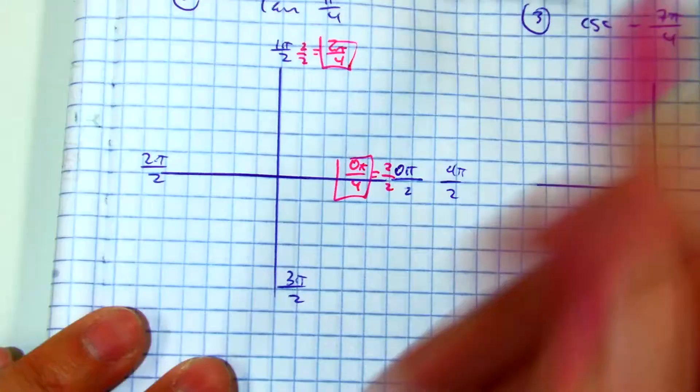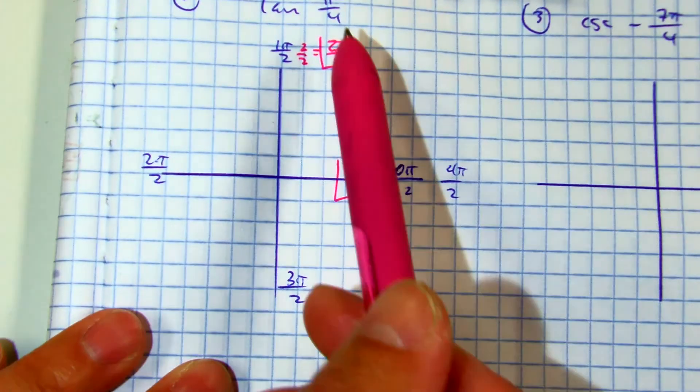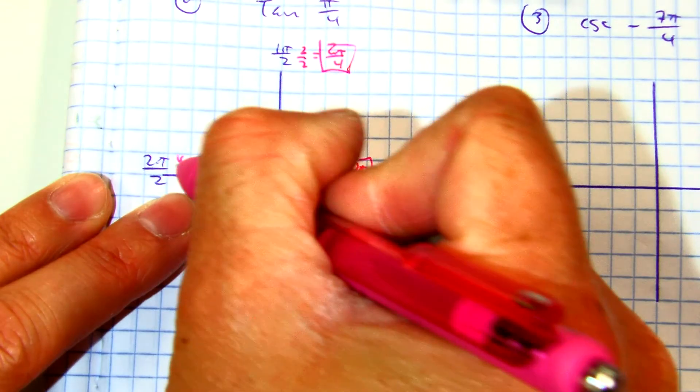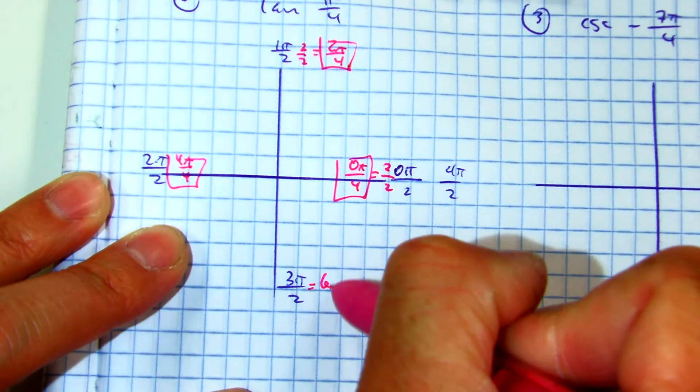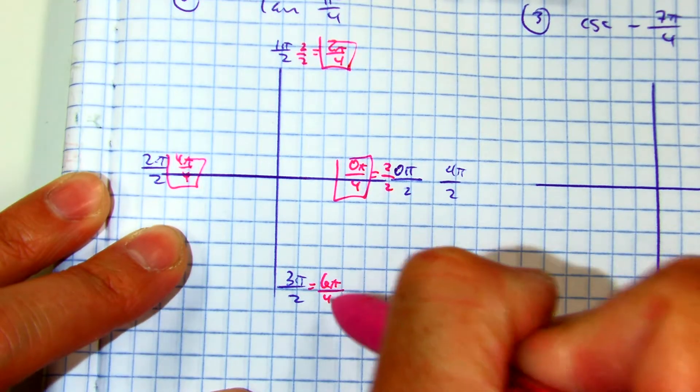And if you recognize the pattern now, you're just counting by 2's: 0, 2, 4, 6, 8.